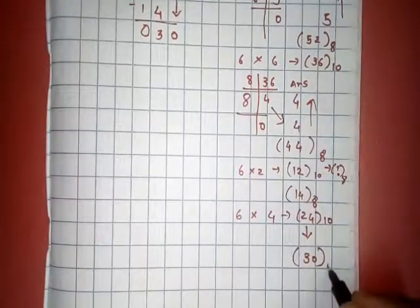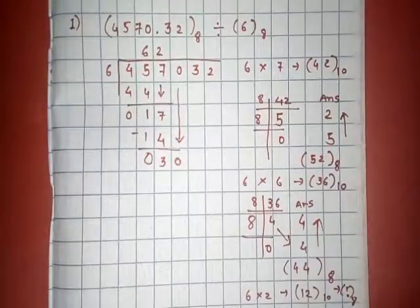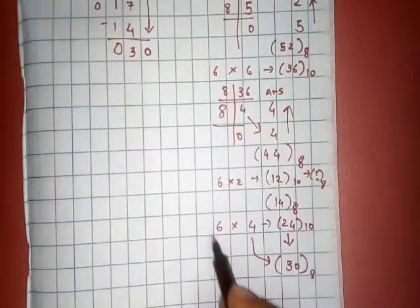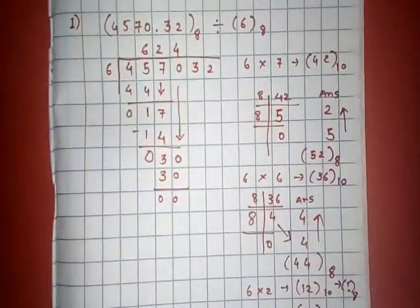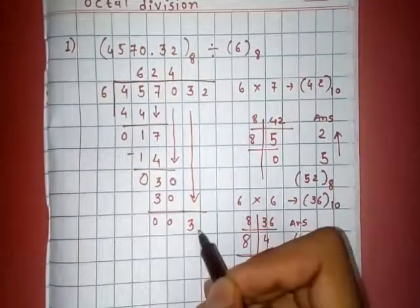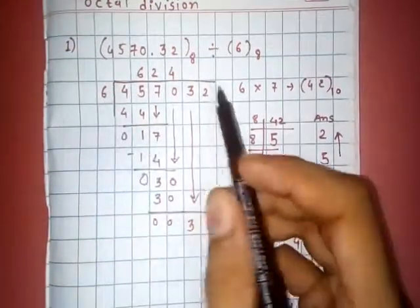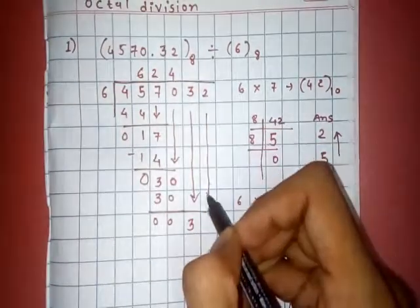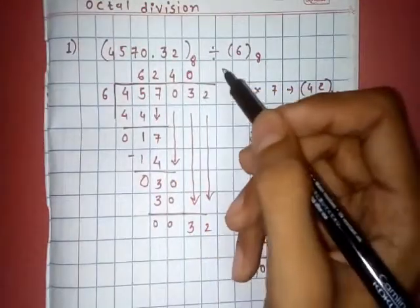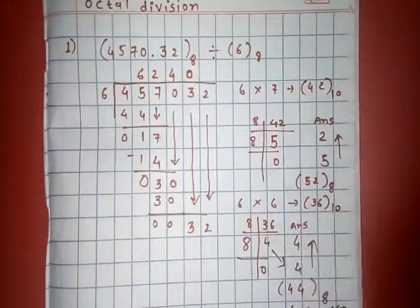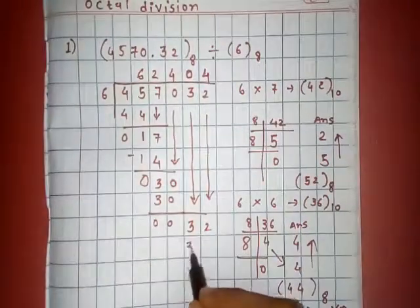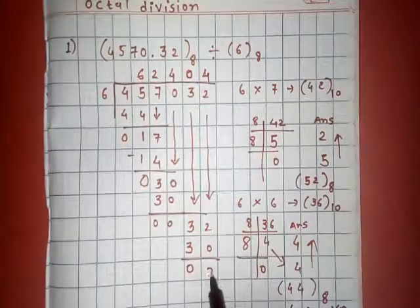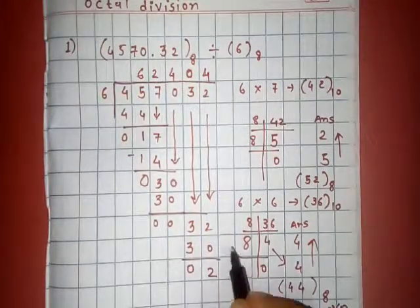This is in octal, so 6 fours are 30 in octal. Put 0, 0. Now put this 3 here. This 3 is less than 5, so 4 in octal. The remainder is 2. Now you can do further division by this method. I will not do it, and this is the remainder.